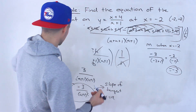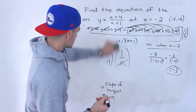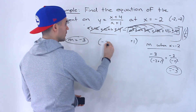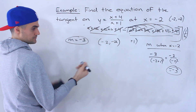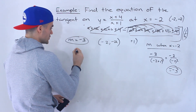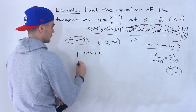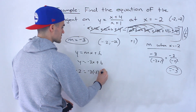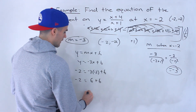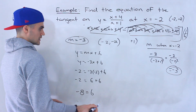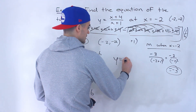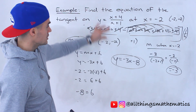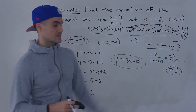Now we can find the equation. We have the slope (m = -3) and the coordinate (-2, -2). Using y = mx + b: y = -3x + b. Plugging in x = -2 and y = -2: -2 = 6 + b, so b = -8. The equation of the tangent line is y = -3x - 8. That's the equation of the tangent on this function at x = -2.